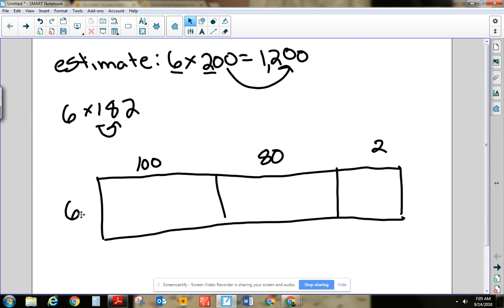Now I'm just going to multiply. 6 times 100 is 600. 6 times 80 is 480, right? Because 6 times 8 is 48, and they move to 0. And then 6 times 2 is 12.